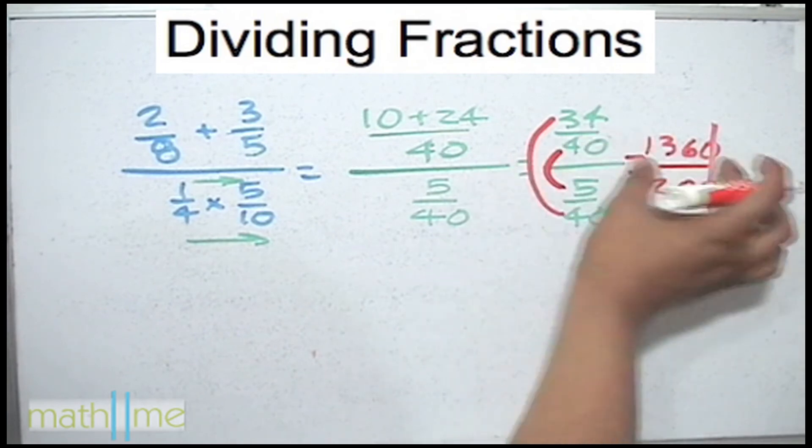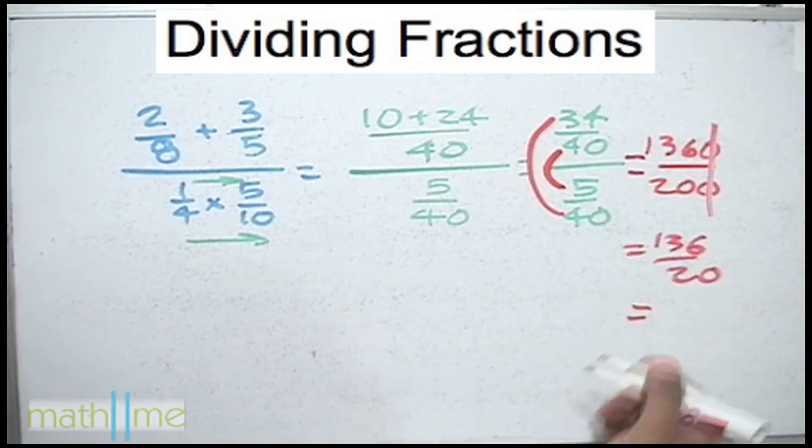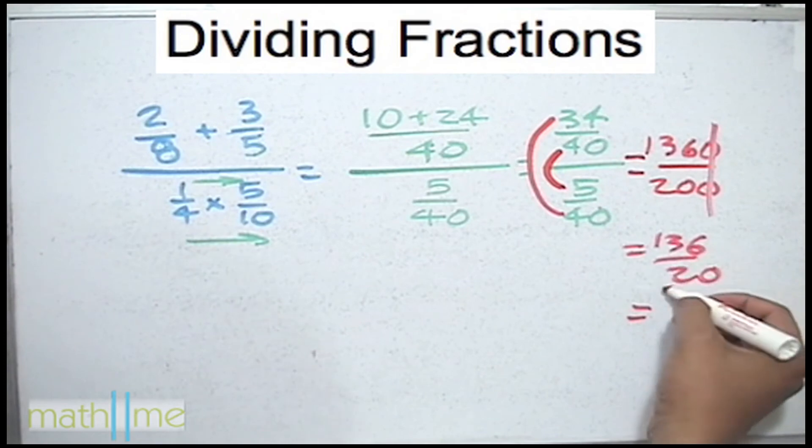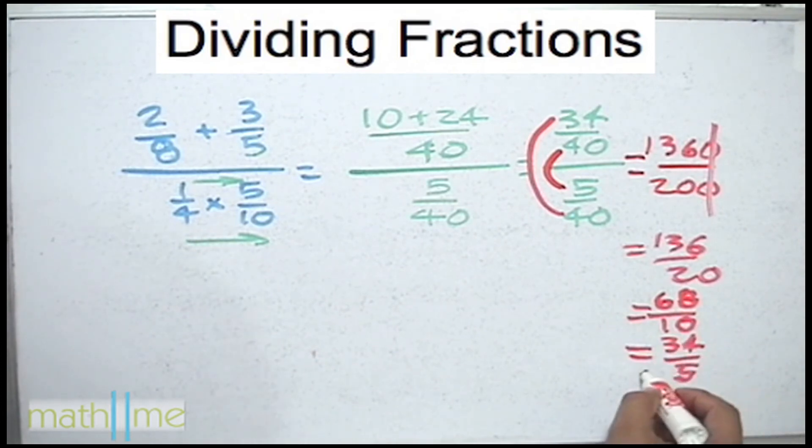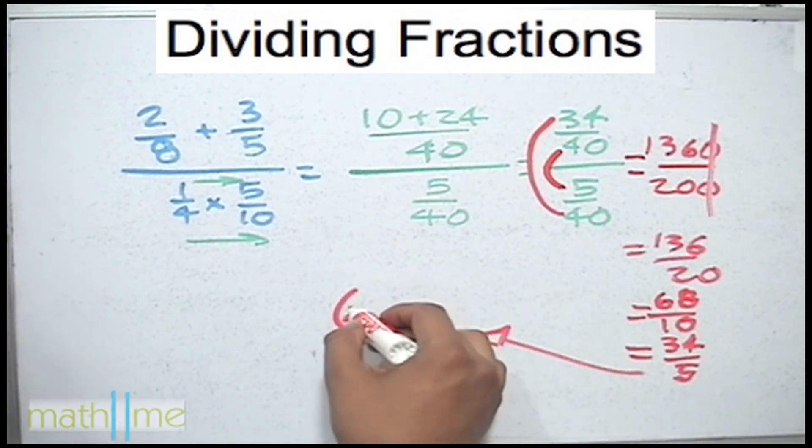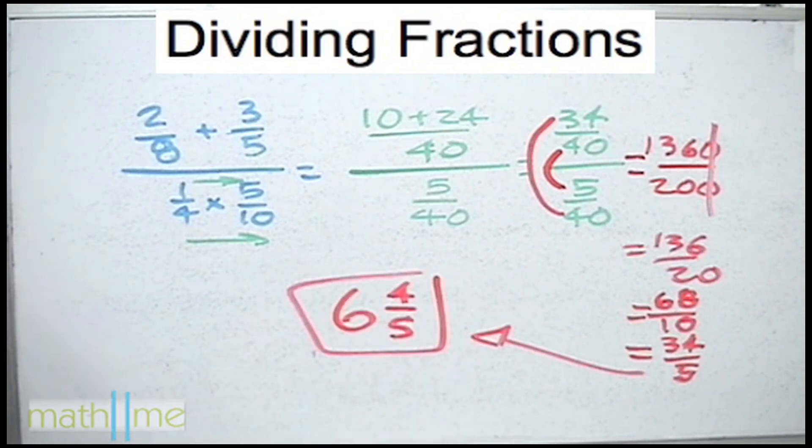We are almost done but let us simplify the result as much as possible. Dividing 136 by 2 is 68 and 20 divided by 2 is 10. Then 68 divided by 2 is 34 and here is a 5 which is a prime number. So how many times does 5 go into 34? The answer is going to be 6 wholes and 4 fifths.